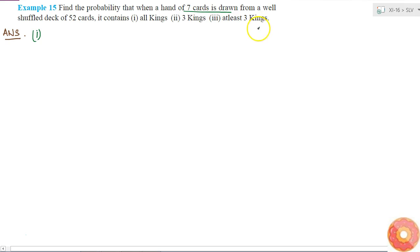We know that out of a deck of 52 cards there are 4 cards which are kings and 48 cards which are not kings. So the first one is probability that all of the 7 are kings, that is probability of 7 kings.